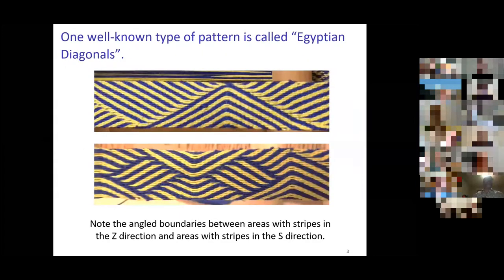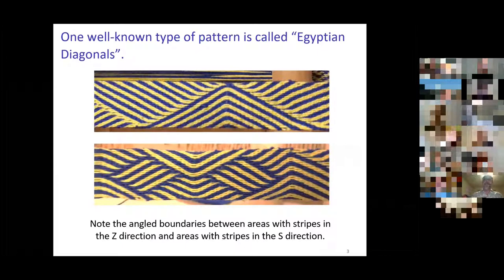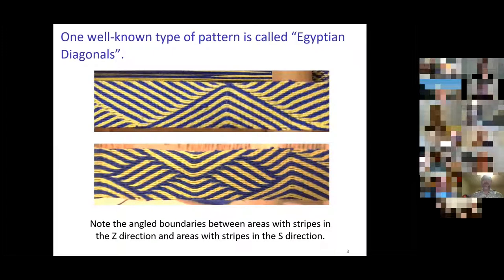Now the type of pattern that I showed you is known as Egyptian Diagonals. It's probably not really Egyptian. It started with discoveries in Egyptian tombs of pictures of fabric that looked like this, and people said, how were those made? Somebody came up with the idea early in the 1900s that maybe it was made by tablet weaving using this technique.